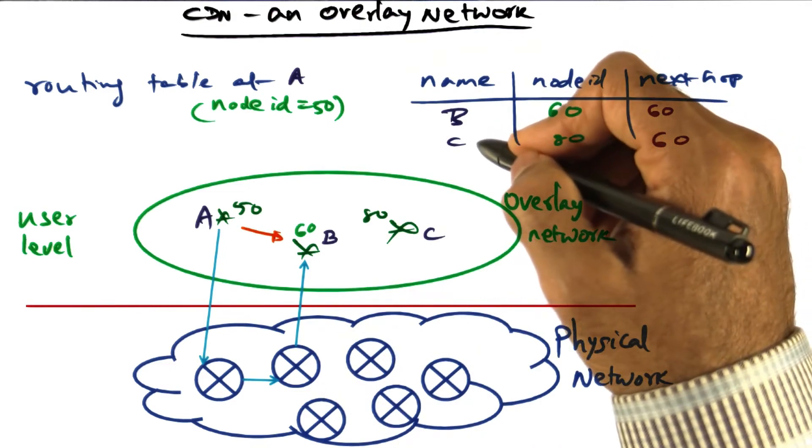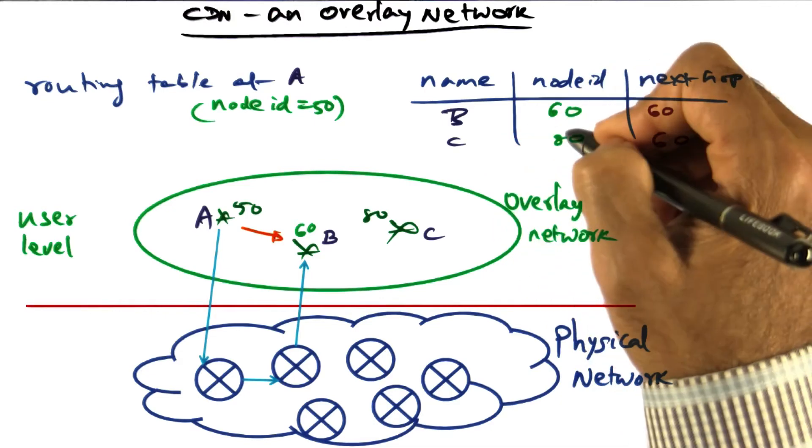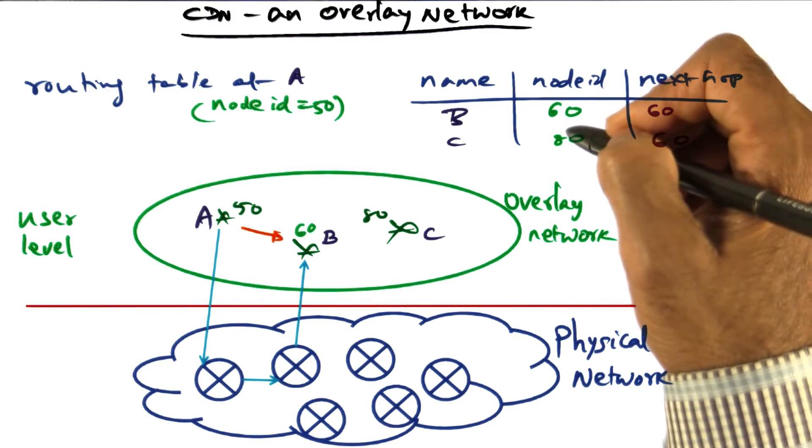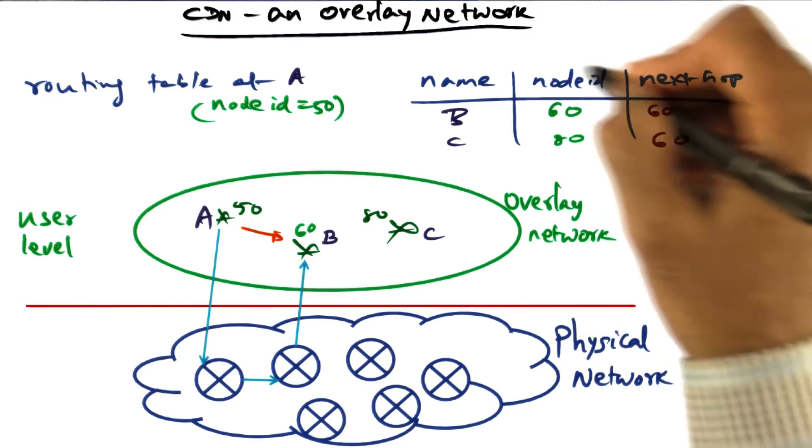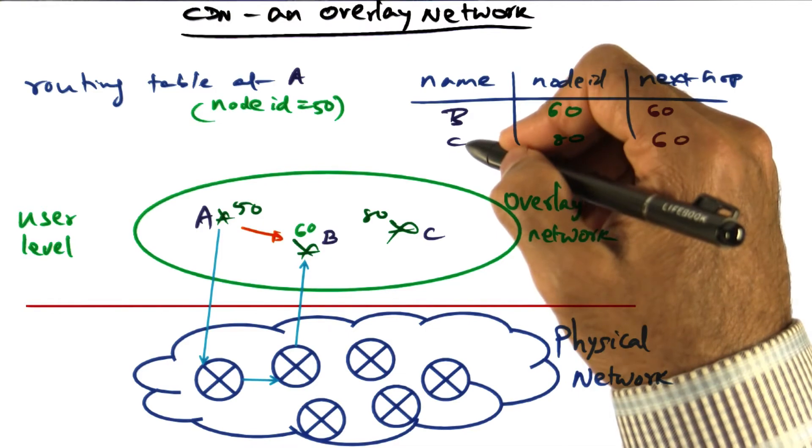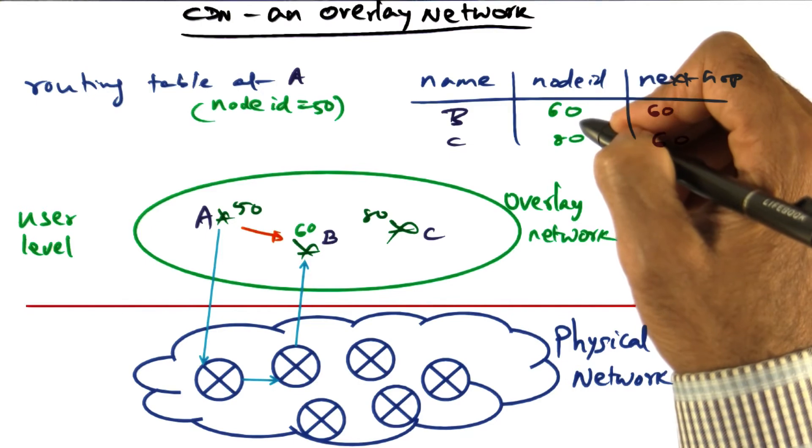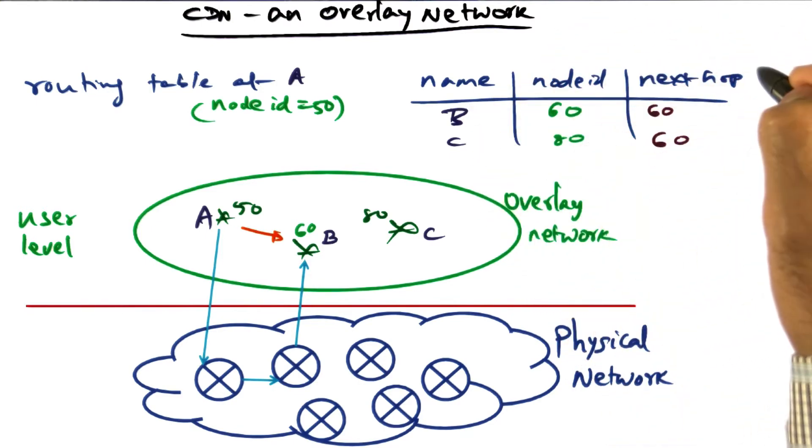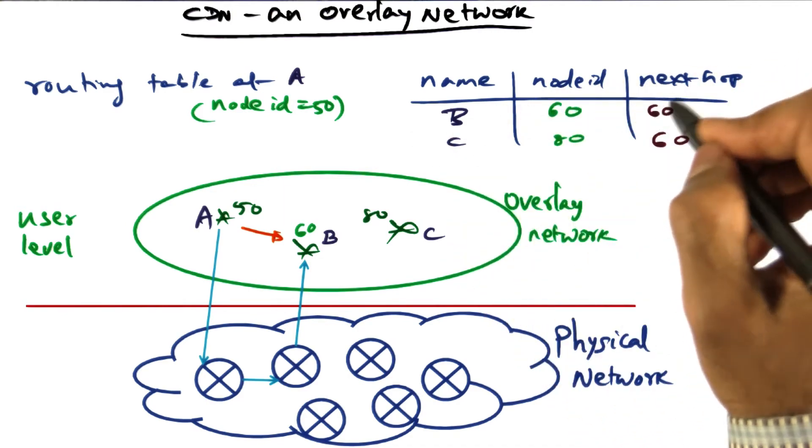What if I want to send a message to node C? I know the node ID of C because my buddy B exchanged that with me, but I have no idea what the IP address of C is. However, I do know that B has a way of getting to C. So in my routing table, given a name of a particular node, I know the virtualized node ID associated with that node—60 for B, 80 for C—and I also know what the next hop is in the user space for getting to that particular destination.